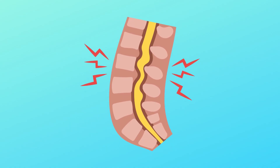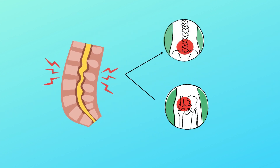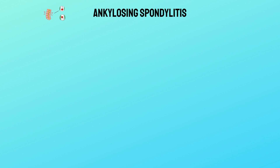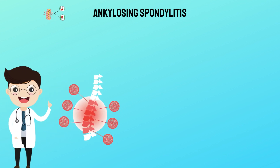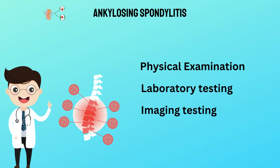Ankylosing spondylitis is a chronic inflammatory disorder affecting the spine and sacroiliac joints. It is a type of arthritis characterized by severe stiffness and pain in the lower back and hips. Diagnosis of AS involves multiple steps, including physical examination, laboratory tests, imaging studies, and genetic testing.